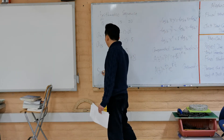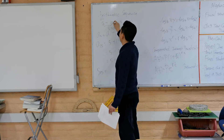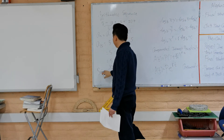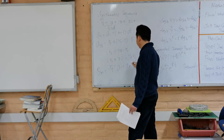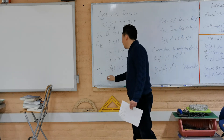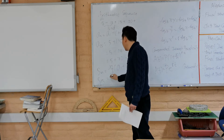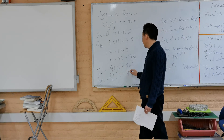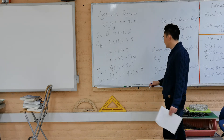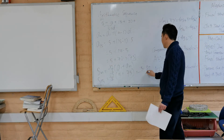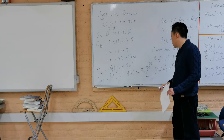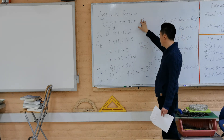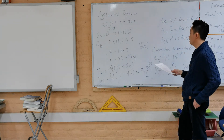To find the sum of the first 15 terms, use the formula: Sₙ = n/2 · (a₁ + aₙ). So S₁₅ = 15/2 · (5 + 75) = 15/2 · 80 = 15 · 40 = 600.